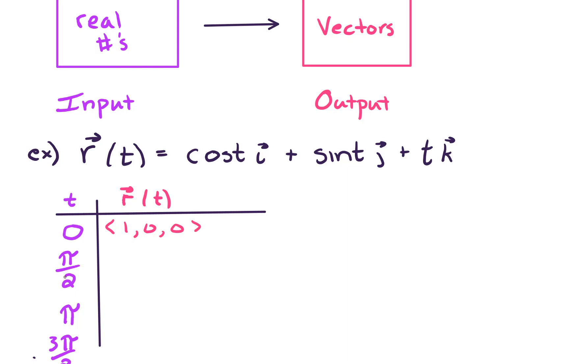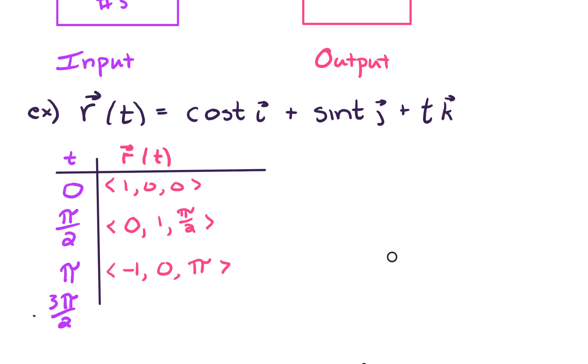Let's keep on going. When t equals pi over 2, cosine of pi over 2 is 0, sine pi over 2 is 1, and our third component is just pi over 2. Next, when t equals pi, cosine of pi is negative 1, sine of pi is 0, last component is pi. And lastly, when t equals 3 pi over 2, we get 0, negative 1, 3 pi over 2.